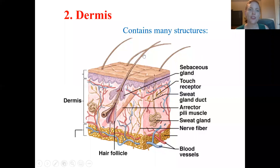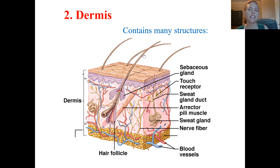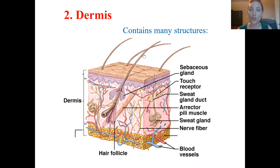In the third piece of the integumentary lecture, we've already talked about the epidermis — the layers of the epidermis and the cells of the epidermis — and now we're talking about the other two layers.